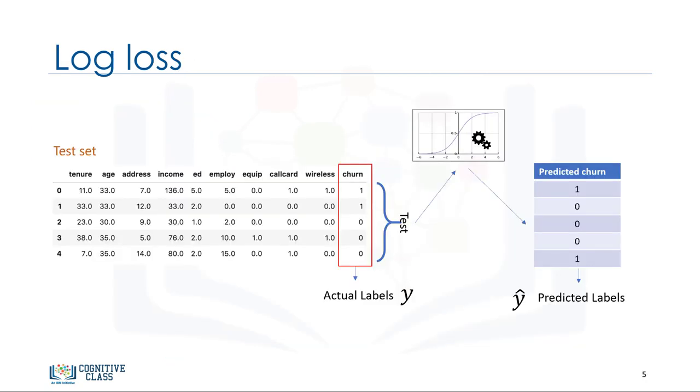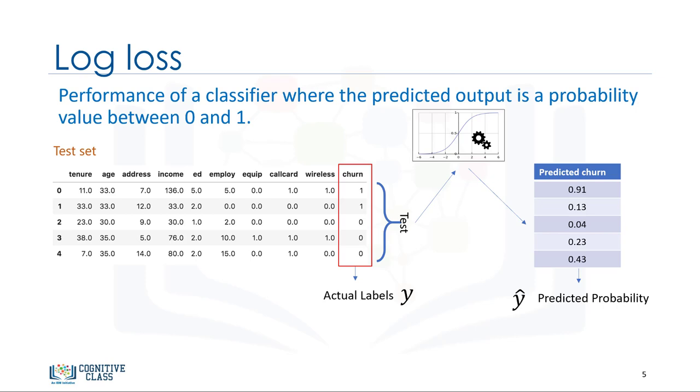Now, let's look at another accuracy metric for classifiers. Sometimes the output of a classifier is the probability of a class label instead of the label. For example, in logistic regression, the output can be the probability of customer churn, i.e., yes, or equals to 1. This probability is a value between 0 and 1. Logarithmic loss, also known as log loss, measures the performance of a classifier where the predicted output is a probability value between 0 and 1.